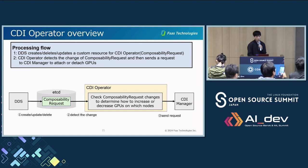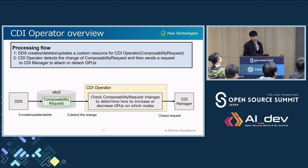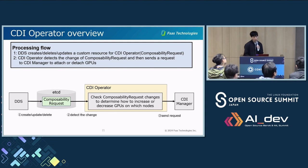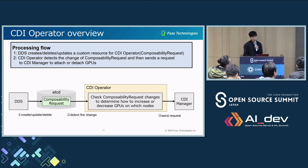This diagram shows the processing flow. First, DDS creates, updates, or modifies custom resources for the CDI operator — this custom resource is called a composability request. If the composability request changes, the CDI operator detects this, then determines how many GPUs should be increased or decreased on which nodes, and sends a specific configuration change request to CDI manager. CDI operator manages the node device according to the desired setting of the composability request. Therefore, it is possible to automatically replace a GPU that has a hardware failure, since there is a difference between the desired setting and actual state.